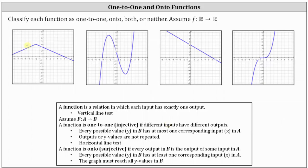If we pass horizontal lines across our graphs, notice how for the first two graphs, the horizontal lines do intersect the graph in more than one point — so these two functions are not one-to-one. However, horizontal lines will never intersect the two graphs on the right in more than one point, and therefore the two graphs on the right are one-to-one functions.